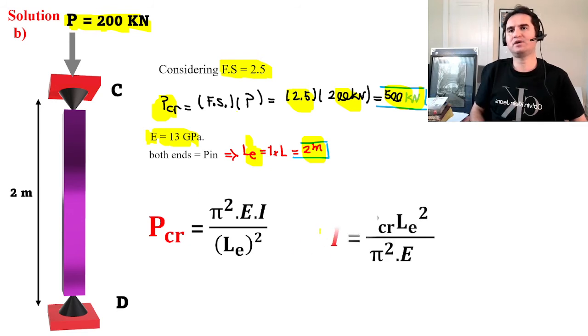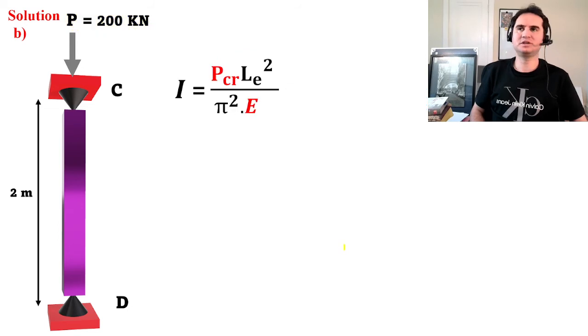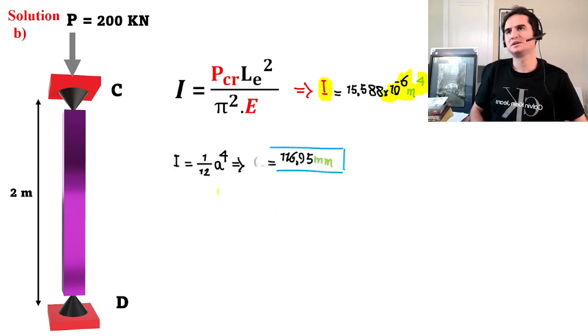We know what modulus of elasticity is, effective length remains the same. If again we rewrite our equation based on moment of inertia, it gives us an I which is equal to 15.5×10⁻⁶ meter to the fourth, and that gives us a is equal to almost 117 millimeters.